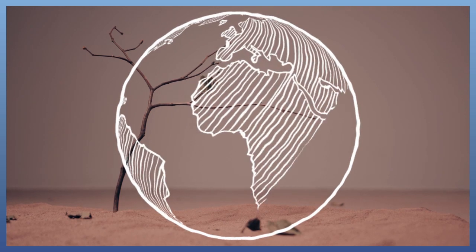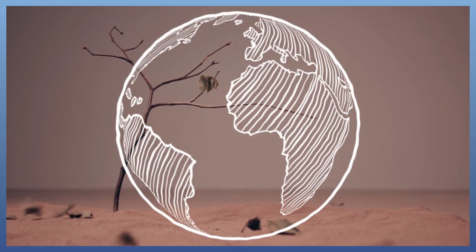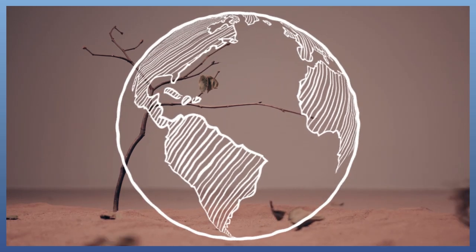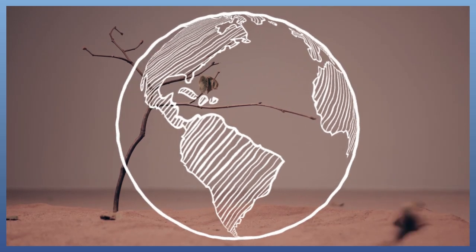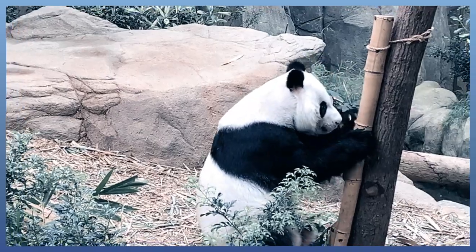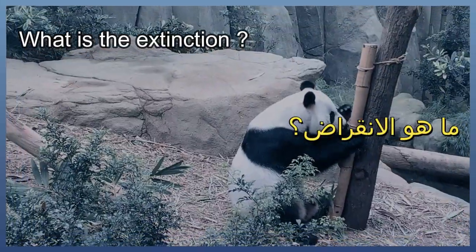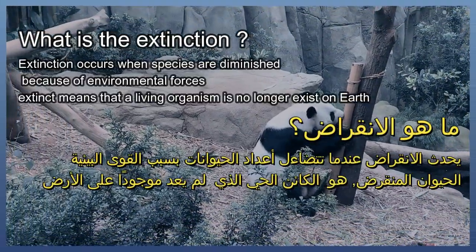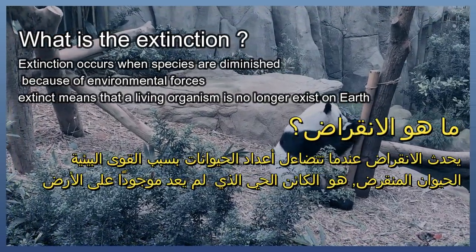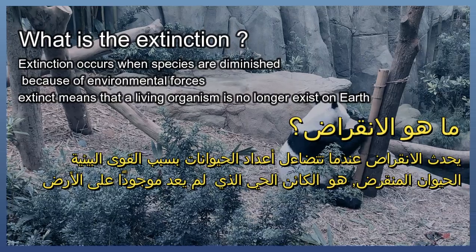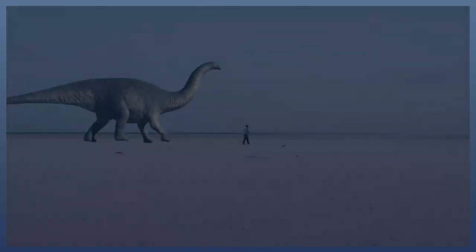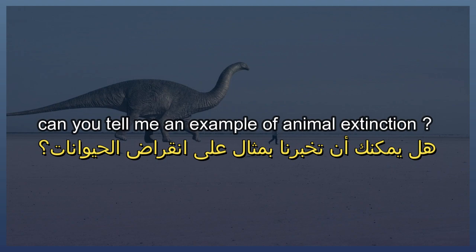Human activity often rapidly changes ecosystems over days or years, and these rapid changes can cause many organisms to move, disappear, die, or even become extinct. What is extinction? Extinction occurs when species are diminished because of environmental forces. Extinct means that a living organism no longer exists on Earth. Can you tell me an example of animal extinction?